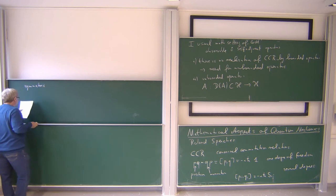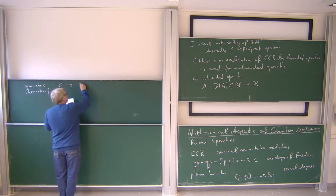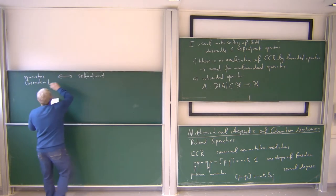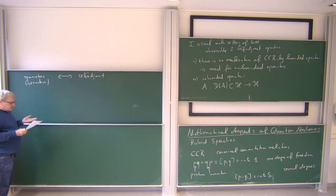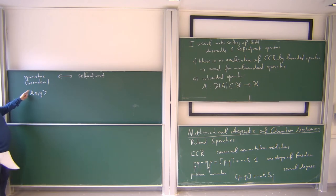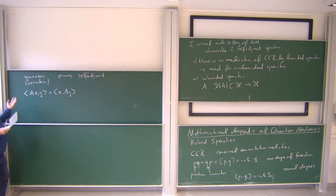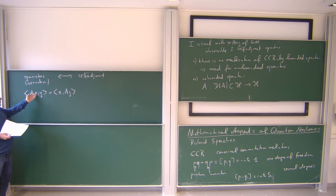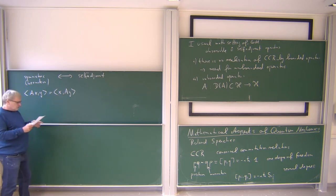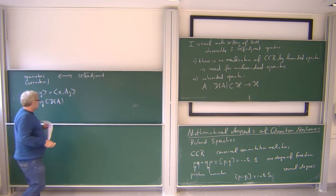For unbounded operators, you can write down symmetric formally: if you have operator A applied to vector x, and take the inner product with y, you can bring A to the other side. If A is symmetric, you get: ⟨Ax, y⟩ equals ⟨x, Ay⟩. For bounded operators this holds for all x and y. For unbounded operators, you require it for x and y in the domain of A. This is the canonical interpretation of symmetric in the unbounded situation.